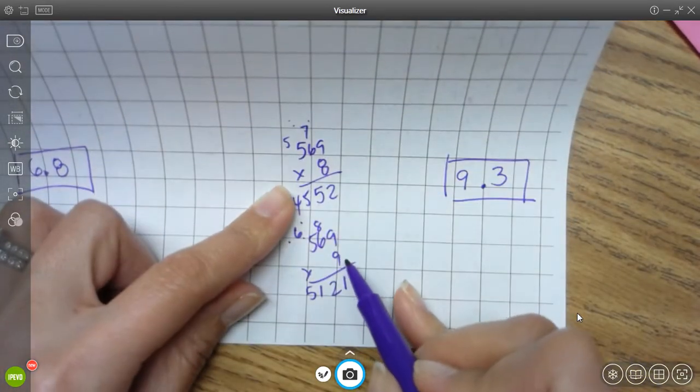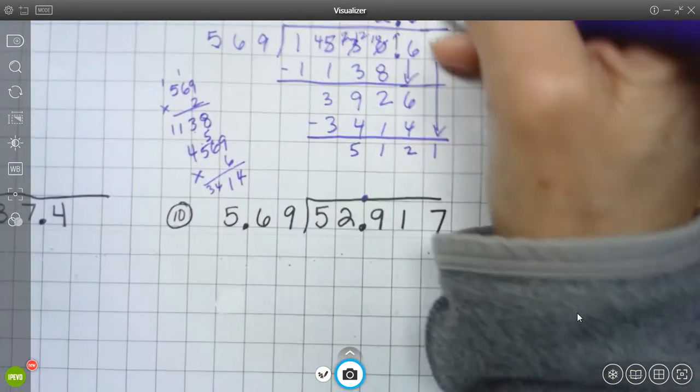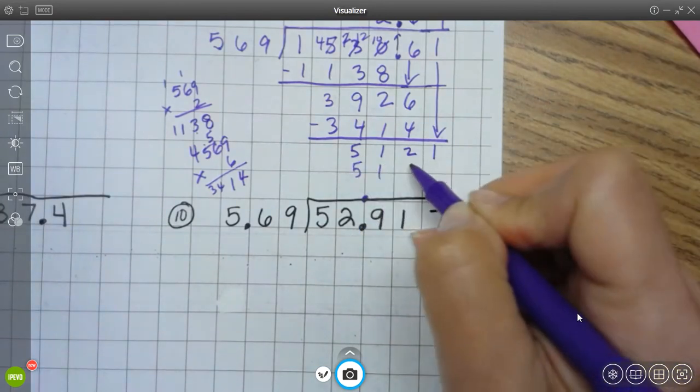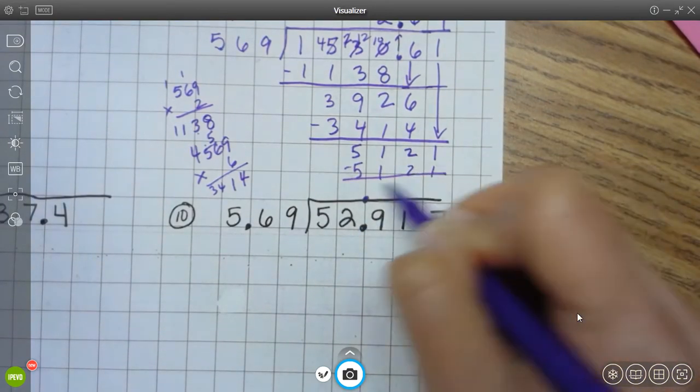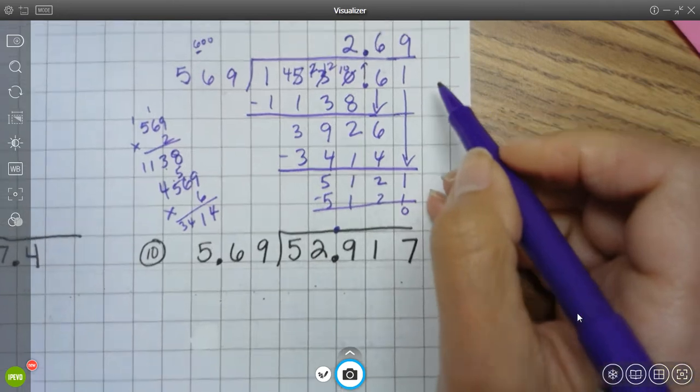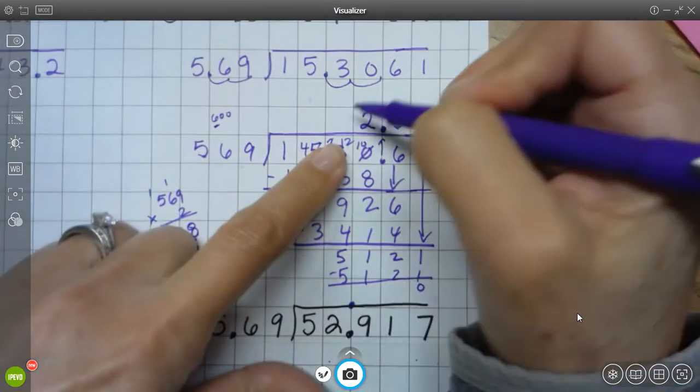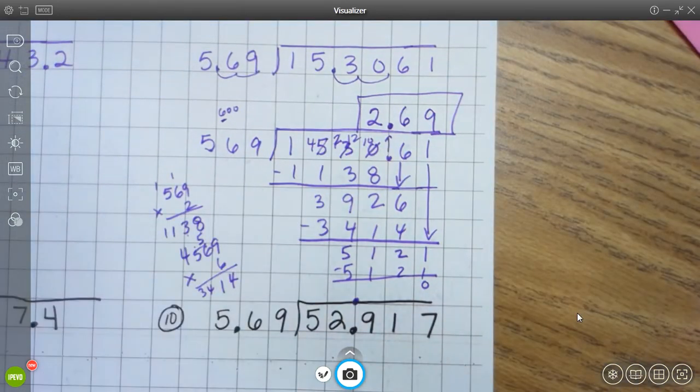So, 569 goes into that number 9 times. Exactly. Right? I'm left with no remainder. I have no more numbers to bring down. So, my final answer, 2 and 69 hundredths. Okay?